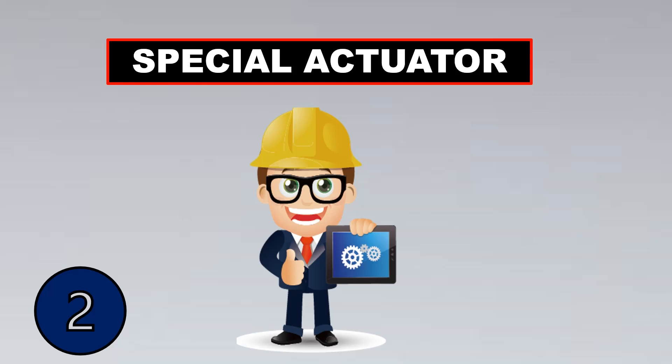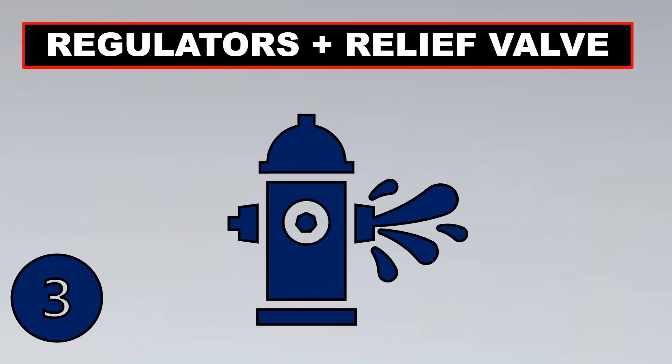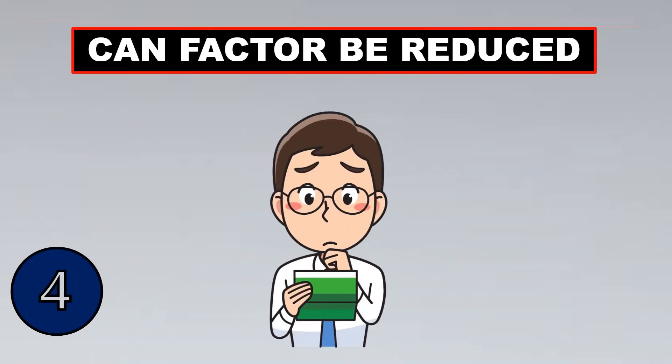The third solution is a special arrangement of regulators and relief valves. The fourth and final option is to verify whether the safety factor can actually be reduced — because sometimes you don't need exactly 1.5 times; you could make it 1.4 times, depending on the safety criticality of the valve.